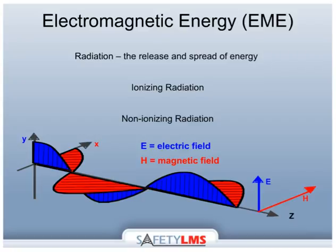Some examples of non-ionizing radiation include AM, FM, TV, cellular, PCS, etc. The change to the body is not cumulative.